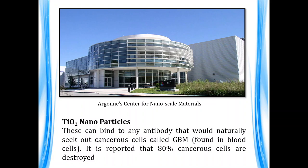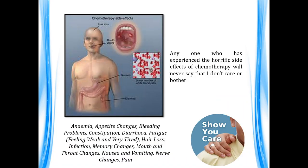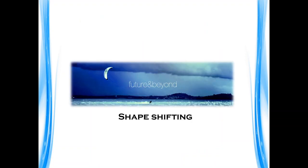At Argonne National Laboratory, here is the aerial view of the facility. Argonne has an IBM Blue Gene/Q computer with very high-capacity processing power. In this center, titanium oxide nanoparticles were used to bind to antibodies that naturally seek out cancer cells, and it was found that 80% of cancer cells are destroyed using these titanium oxide nanoparticles. When we think about cancer patients suffering through chemotherapy — with anemia, appetite changes, bleeding problems, constipation, diarrhea, hair loss, nausea, vomiting, nerve changes, and pain — this nanotech-based treatment will be very useful in the future.